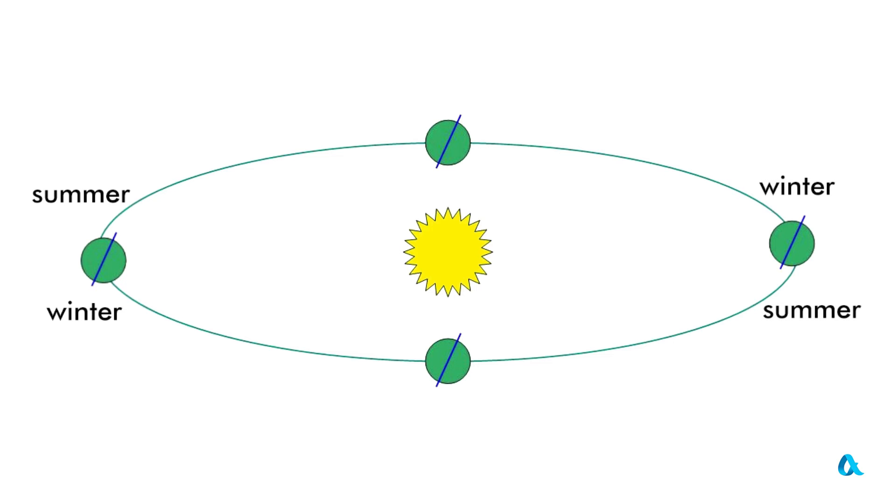When the Earth is on the opposite side of its orbit, everything happens the other way around. It is currently summer in the southern hemisphere and winter in the northern hemisphere.